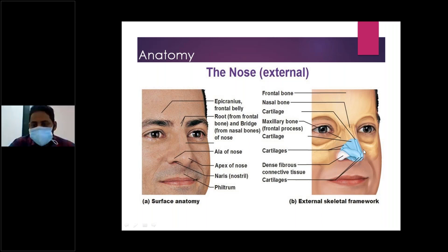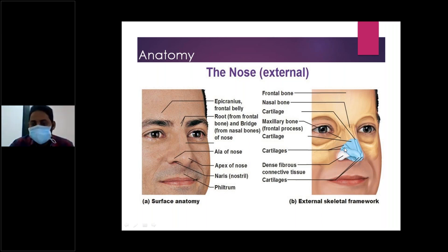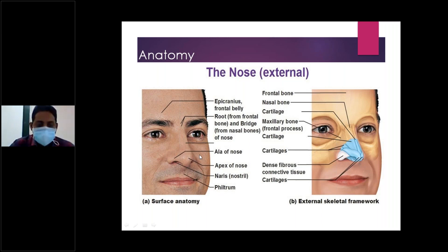This is the bony architecture — the actual bony region — and this is the cartilaginous region. If you remove the entire cartilaginous part, you will see an opening in the skull. If you imagine a skull with just the bony part, you see an opening which is known as the pyriform aperture. So the ala of the nose, the columella, and the pyriform aperture are terms important for future slides.